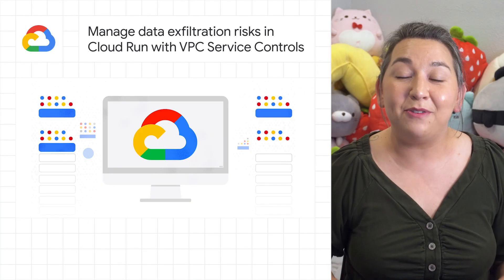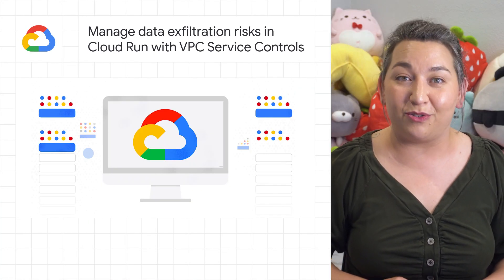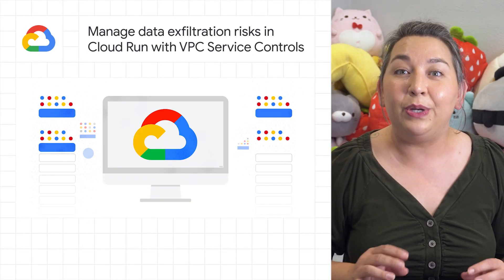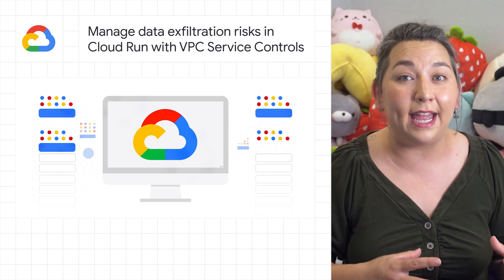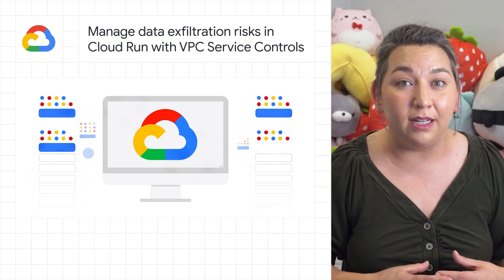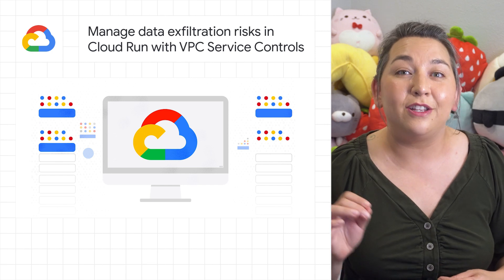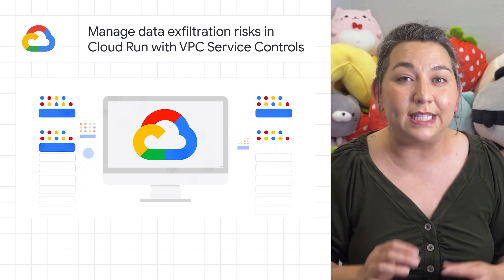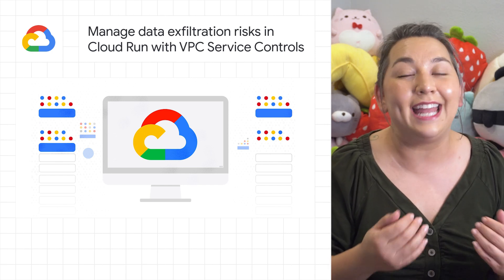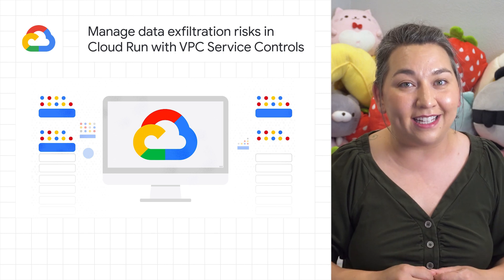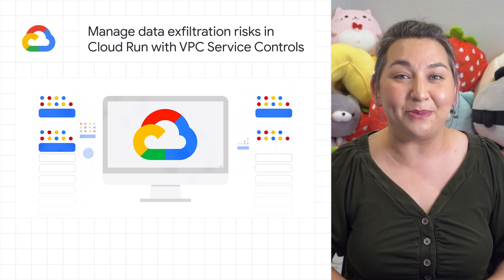Cloud Run now supports VPC service controls. You can now protect your Cloud Run services against data exfiltration by using VPC service controls in conjunction with Cloud Run's ingress and egress settings. For more, check out the blog post.